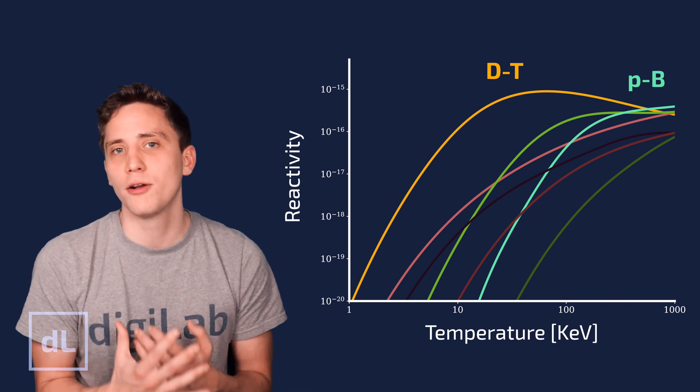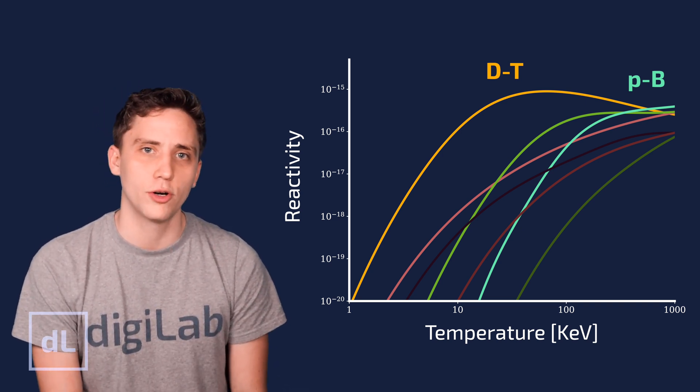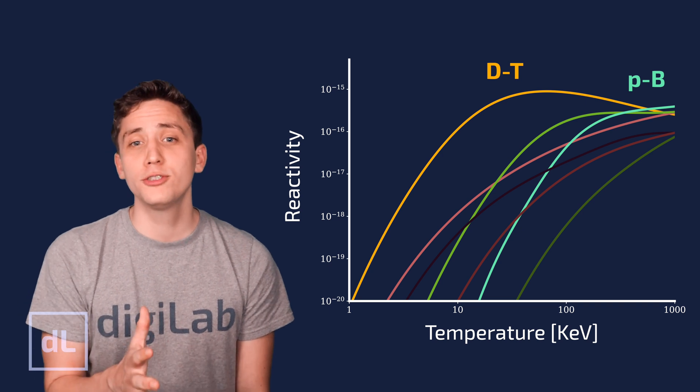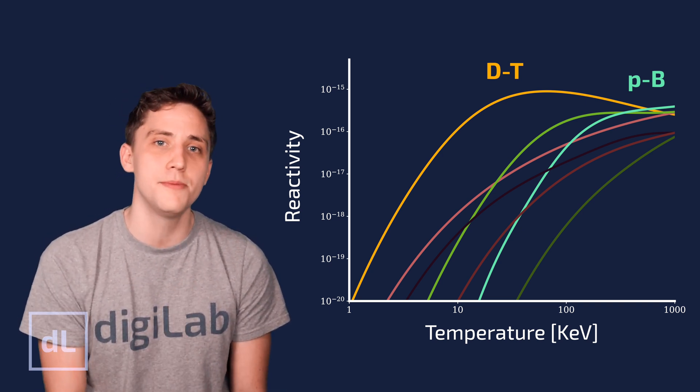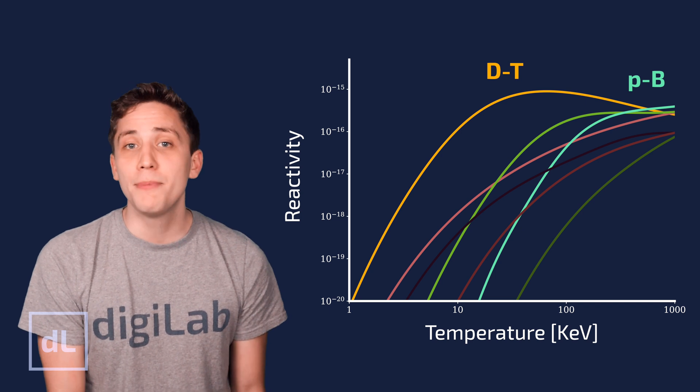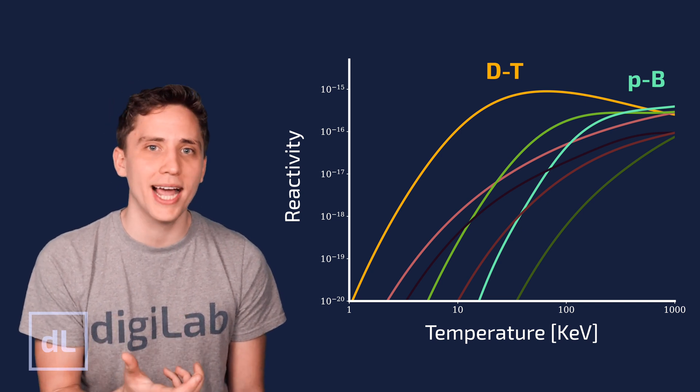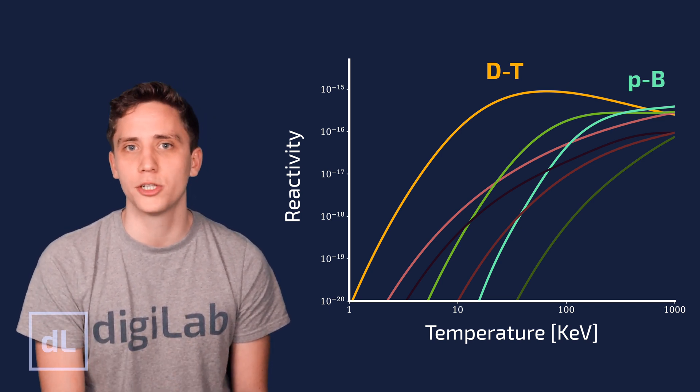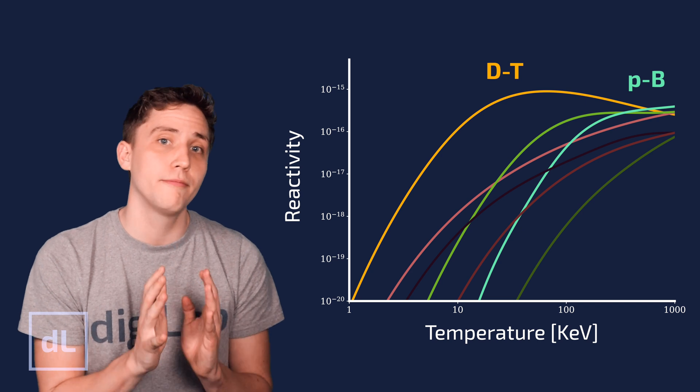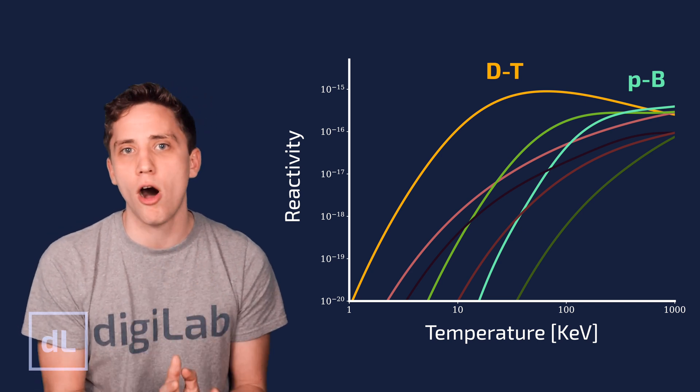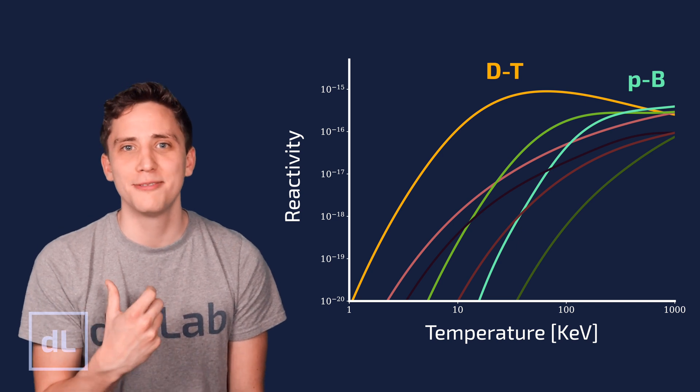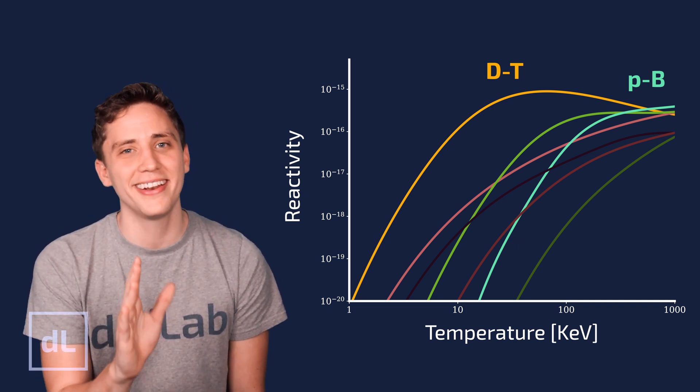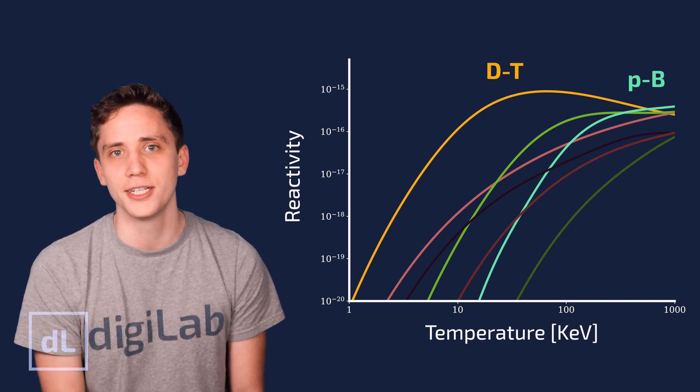What we can also see is that the peak in reactivity for DT is at a relatively modest temperature. And because of this, because of the high reactivity and relatively modest temperature we need, deuterium-tritium fusion is the most common fuel source used in fusion projects. So DT seems great in terms of achieving easy fusion, but there are a few downsides to using DT.